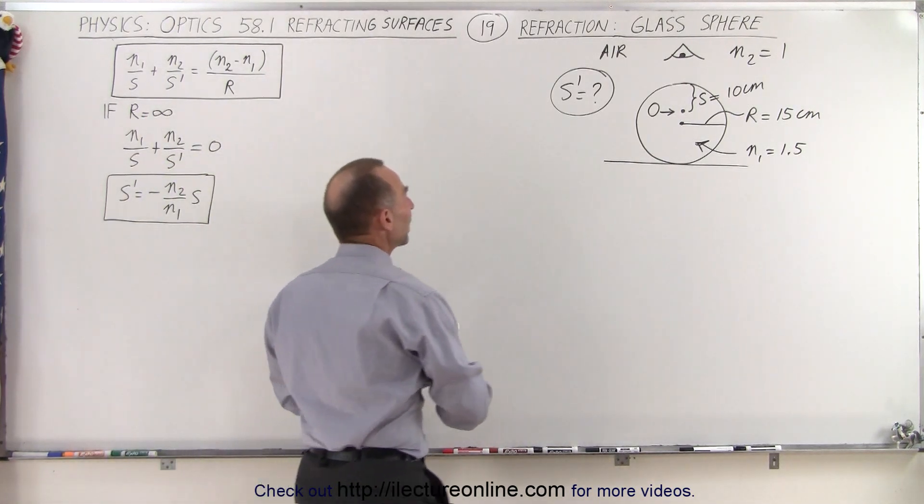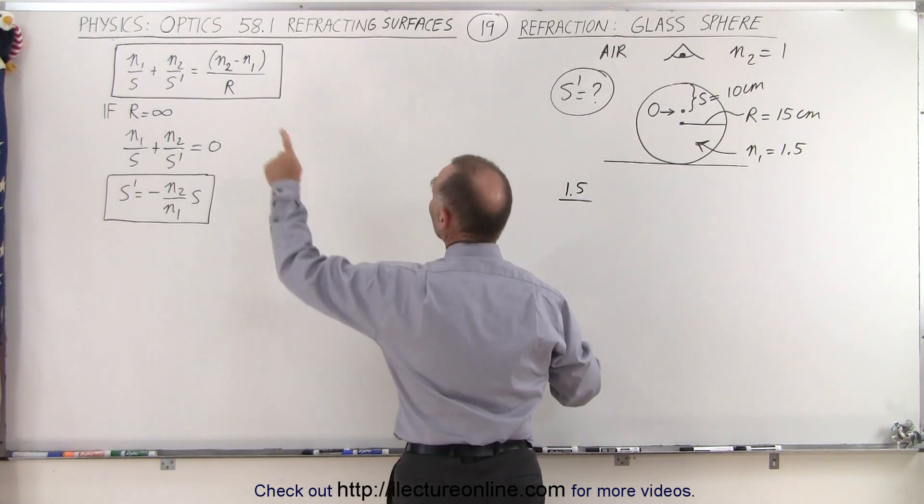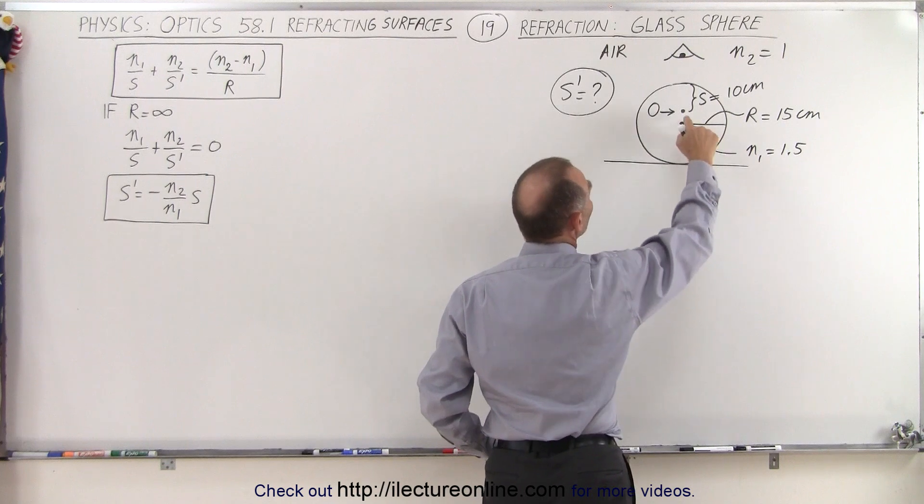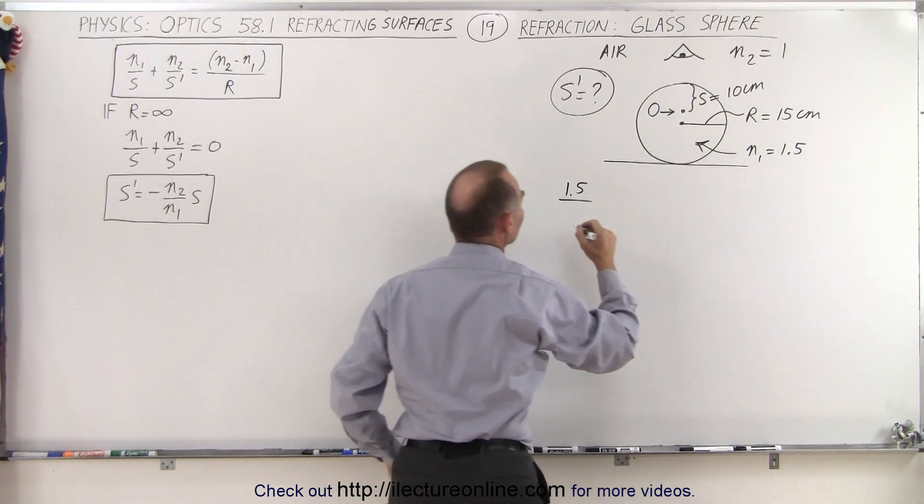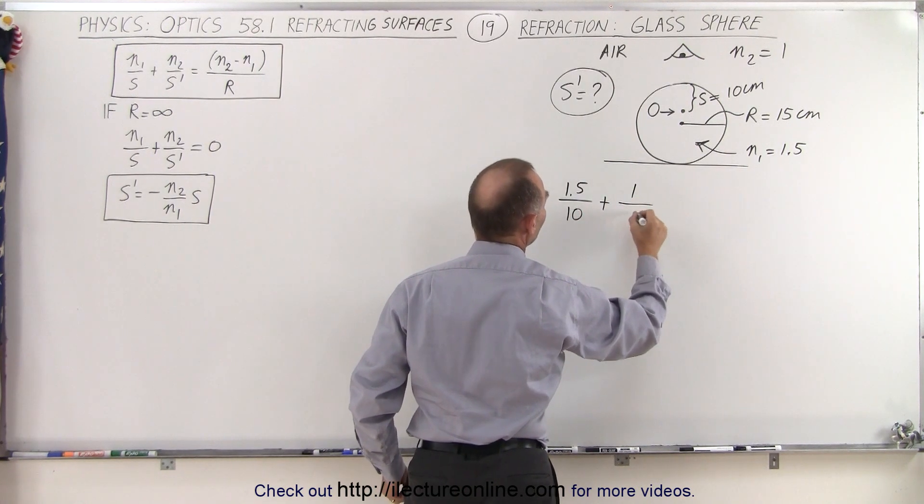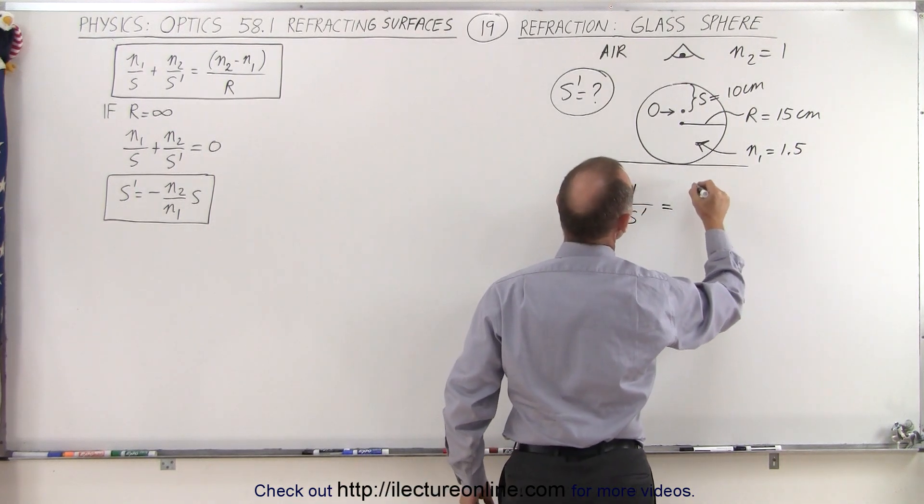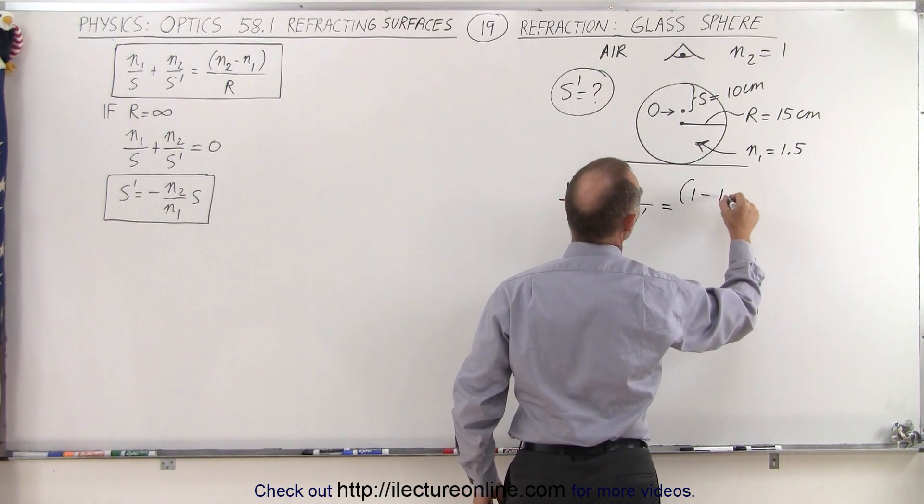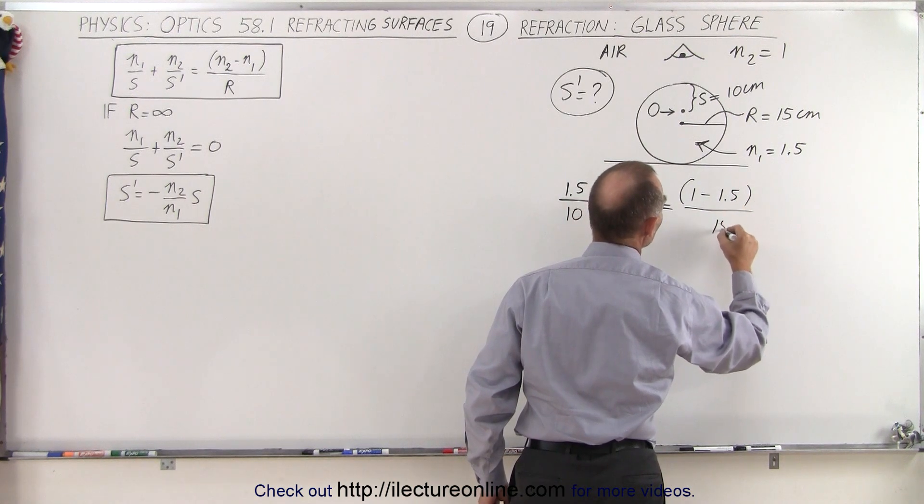Plugging all that into the equation, we get n1, which is 1.5, divided by s. That's the distance from the object to the boundary between air and glass, which would be 10 centimeters. Plus the index of refraction of the air divided by s prime, which is what we're looking for. That's going to be equal to n2 minus n1, which is 1 minus 1.5, divided by the radius, which is 15 centimeters.